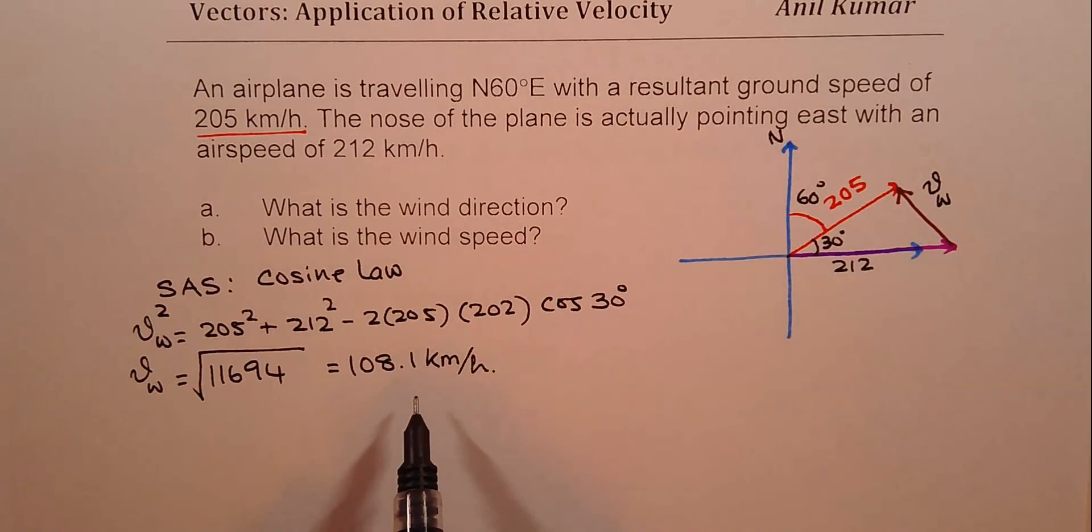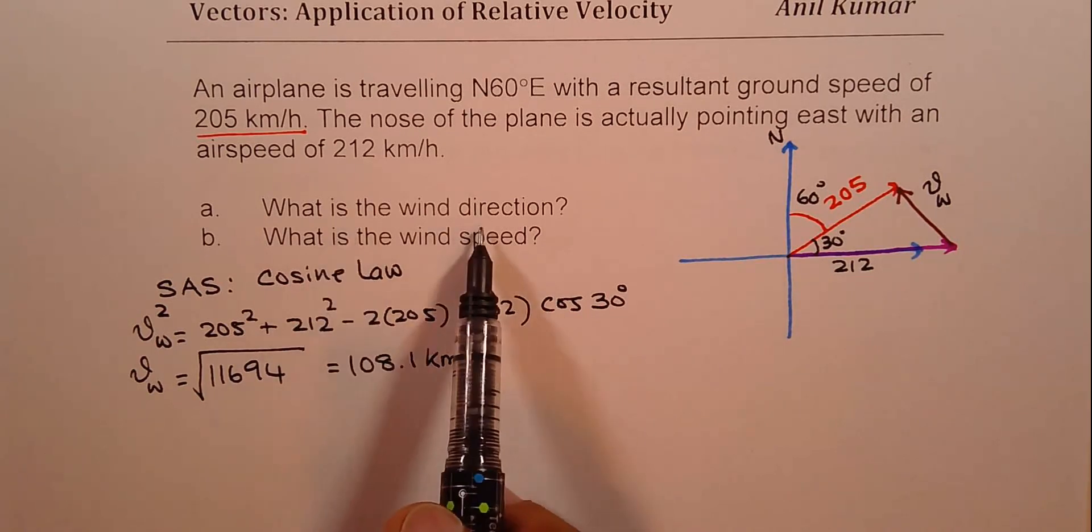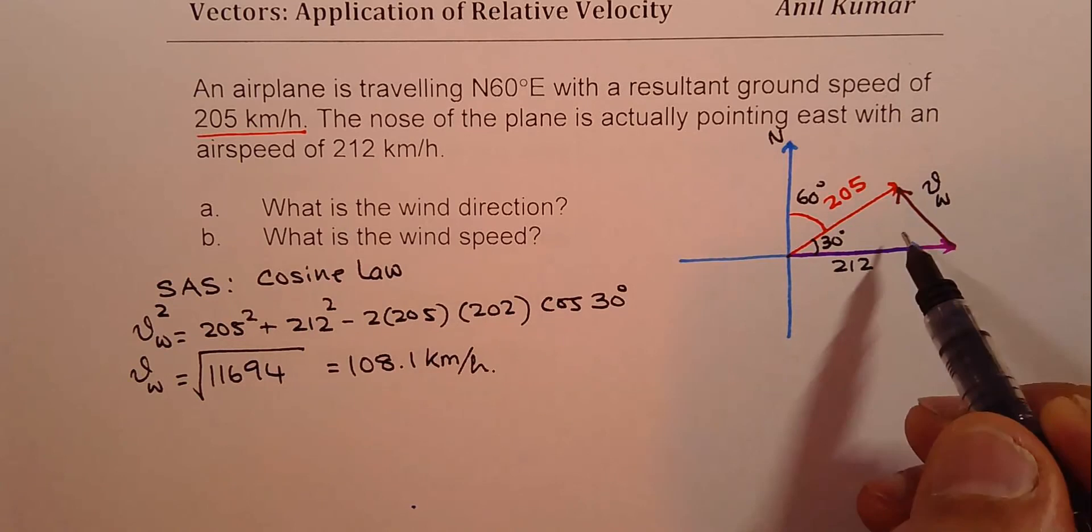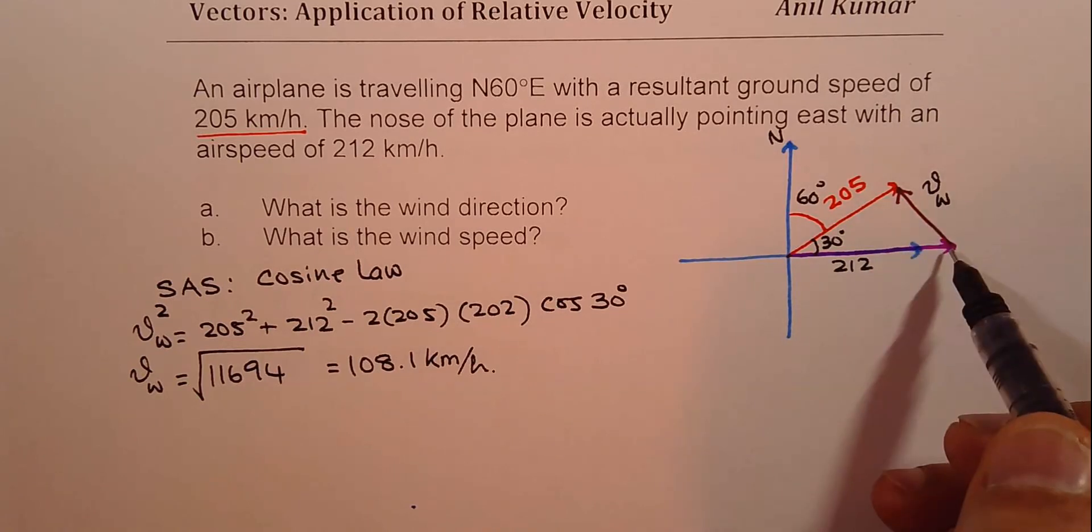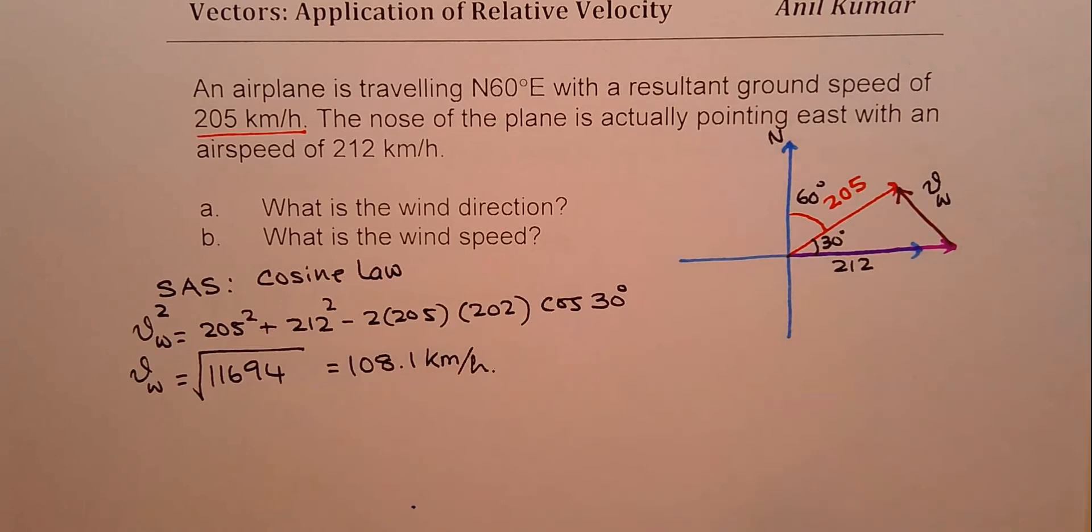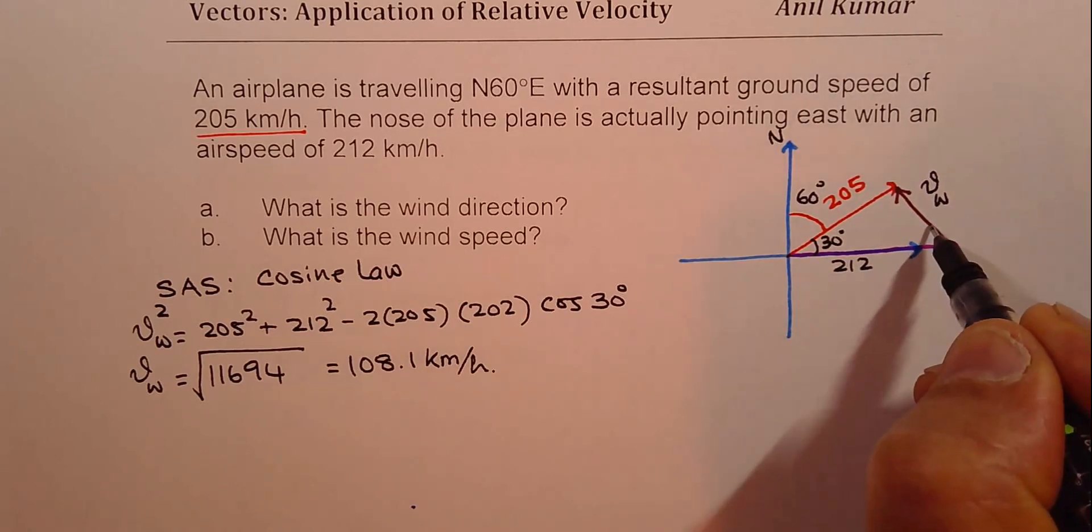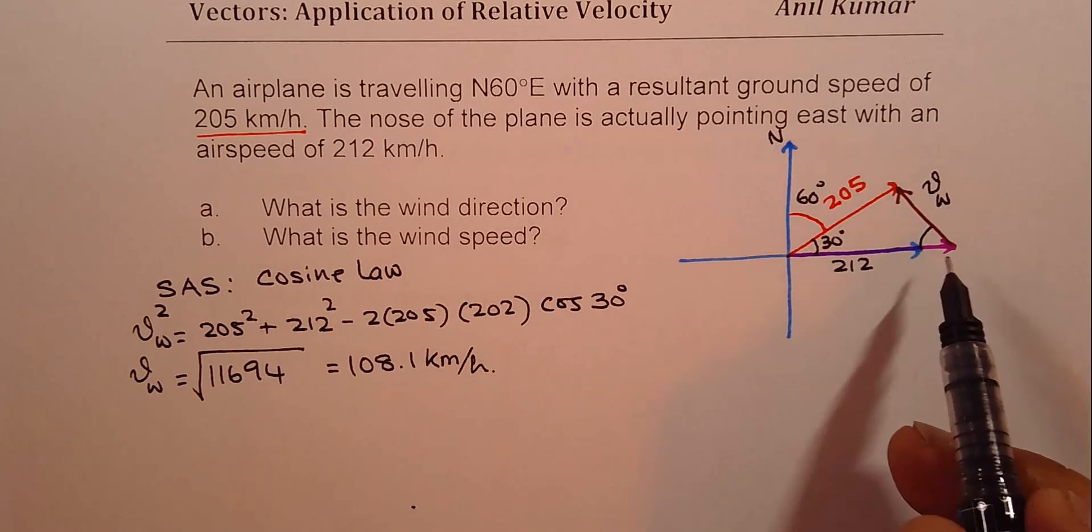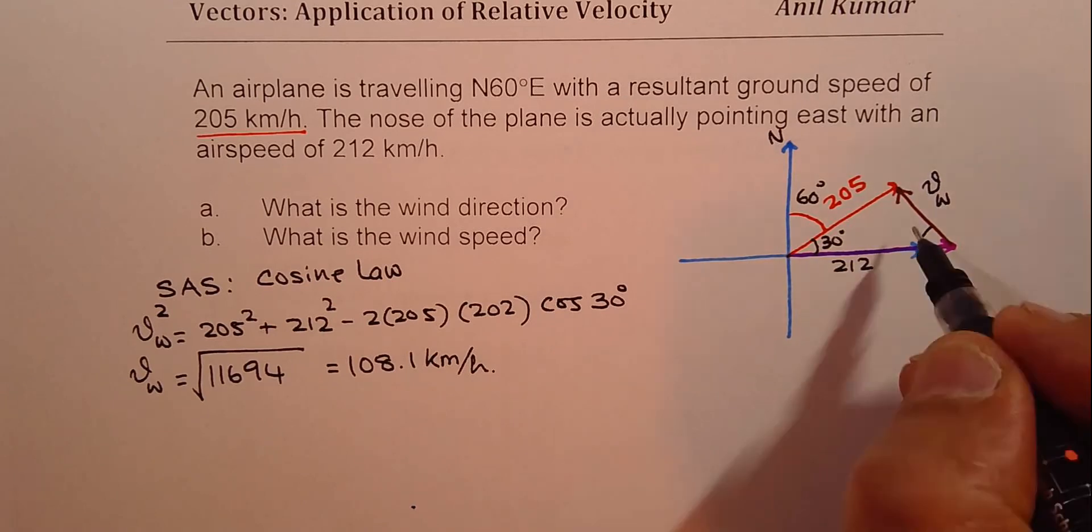Now, we need to find the direction. So once you know wind velocity, you can actually find the direction using sine. So for the direction, let us find this angle first and then we will work out. So let us call this direction as theta.